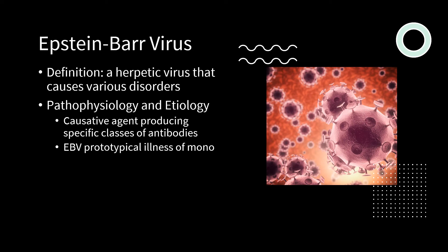The Epstein-Barr virus is a herpesvirus that causes various disorders. Approximately 95% of adults between 35 and 40 are infected in the United States. Adolescents and young adults have a 35-50% chance of developing infectious mononucleosis. Epstein-Barr may remain dormant in immune system cells, and in some cases carriers develop nasopharyngeal carcinoma and possibly Burkitt's lymphoma. After oral exposure, the virus infects B lymphocytes; abnormal lymphocytes develop from CD8 T cells. After primary infection, the virus remains within B lymphocytes for life and undergoes intermittent asymptomatic shedding from the oropharynx.